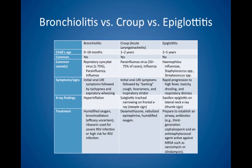X-ray findings: in bronchiolitis, hyperinflation of the lungs. In croup, subglottic tracheal narrowing on the frontal X-ray, the so-called steeple sign. In epiglottitis, a swollen epiglottis on the lateral neck X-ray, the so-called thumb sign.